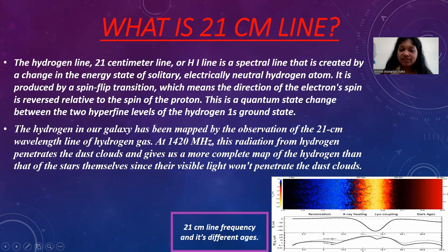Now, if you look at this picture which I have written "21 centimeter line frequency and its different ages," you will see that this image shows the different frequency at which the 21 centimeter line exists, and also you can see the different ages, like here you can see the dark age.